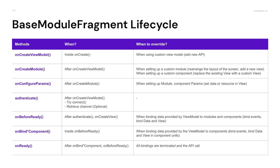Methods are called in order from the top of the table. They are called within the onCreate method in the order of ViewModelCreation, ModuleCreation, ParamSetting, and Authentication. After Authentication and onCreateView is finished, methods that bind the views and data are called. Regarding customization, it is written in the 'when to override' column of the table. We will look at this in detail in the next customization section.